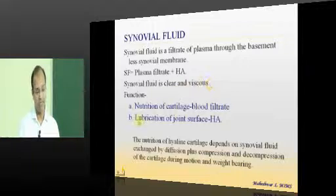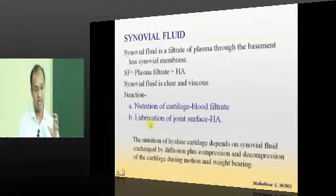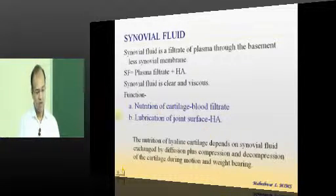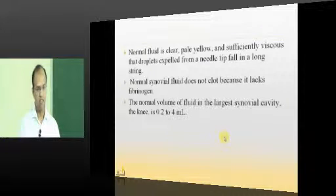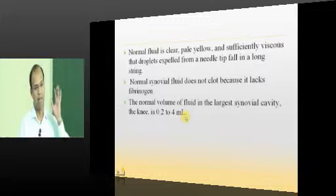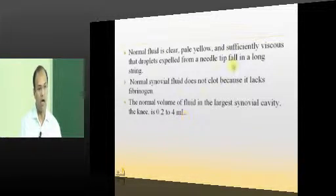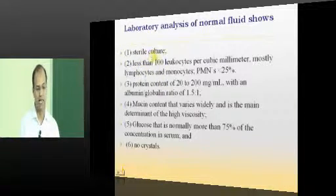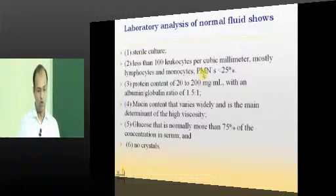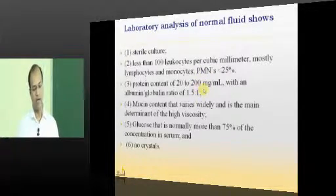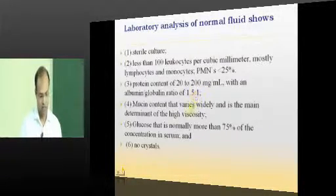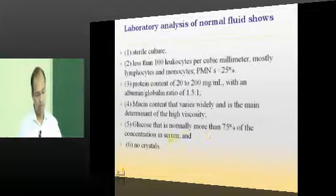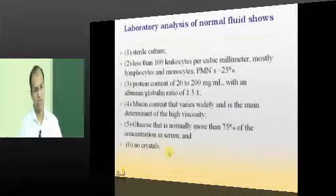Second thing is because of its high viscosity, it acts as a lubricant to the joint surface so that the movement occurs freely without any friction and noises, crepitus. The synovial fluid is very small in amount, say 0.2 to 4 ml in the maximum possible joint like knee joint. Once you take this synovial fluid it is sterile, less than 100 leukocytes and less than 25 percent neutrophils. Usually the protein count will be between 20 to 200 mg per deciliter. Mucin content being very high contributes to high viscosity. Glucose is normally 75 percent and above compared to the concentration of the serum. There are no crystals seen usually in normal synovial fluid.